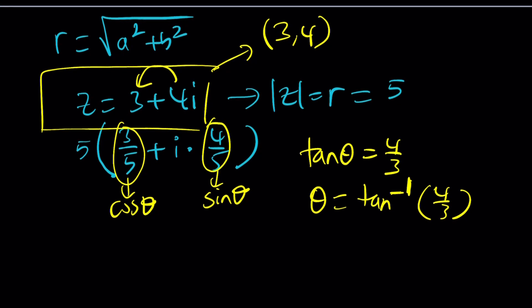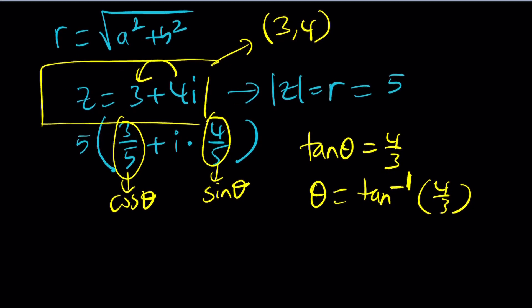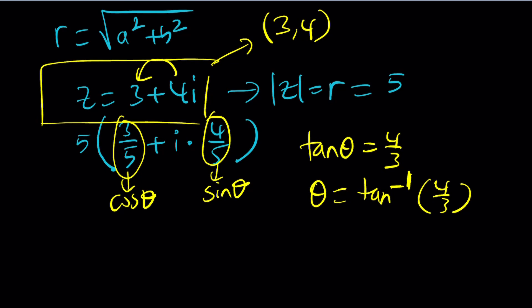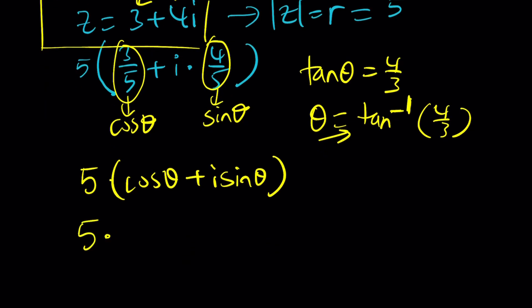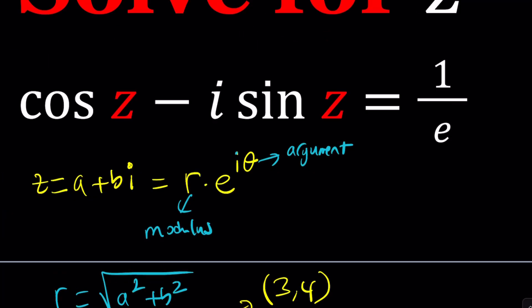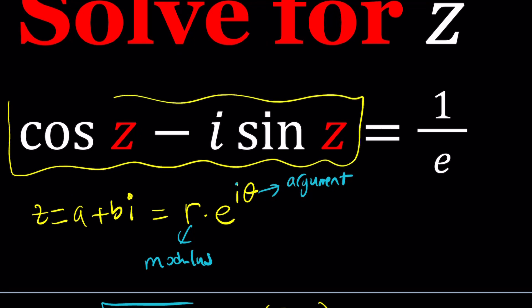So what do we do? We found the r and we found the theta. So now we can write this as 5 times cosine theta plus i sine theta, and the theta is just the angle which satisfies this equation. And then from here we can write it in a more compact way, e to the power i theta. So that's our goal here, to take this number and write it as r times e to the i theta. And e is important here because we have 1 over e on the right-hand side.